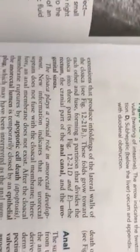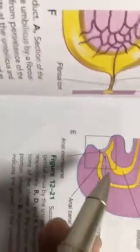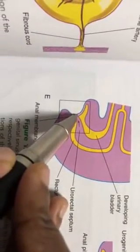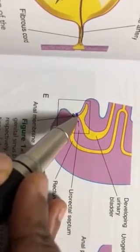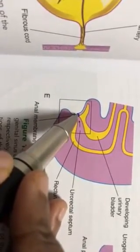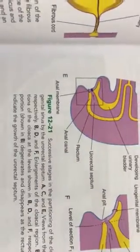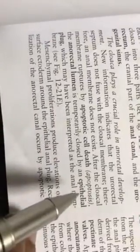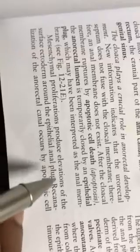The lower cloacal membrane area is temporarily closed by an ectodermal plug — the ectodermal area thickens and forms a plug. This area becomes obliterated for a few weeks, then canalization takes place — a gap forms again. This is called the anal pit. By the 8th week of development, the anal pit forms through canalization, after the anorectal lumen is temporarily closed by the epithelial plug and mesenchymal proliferation.